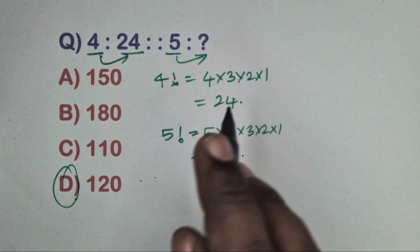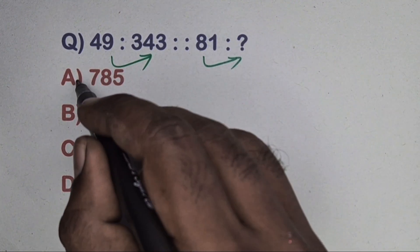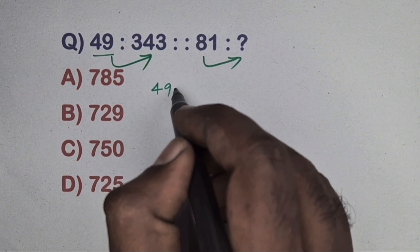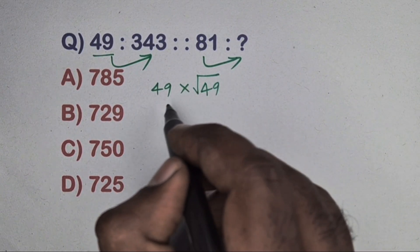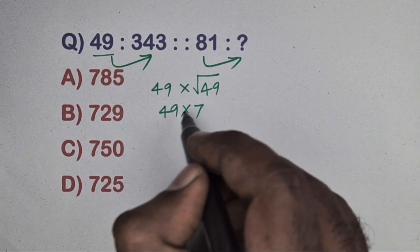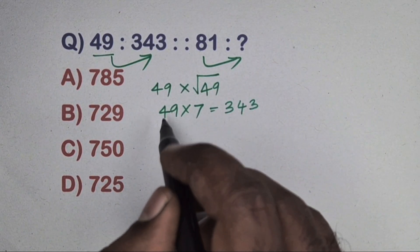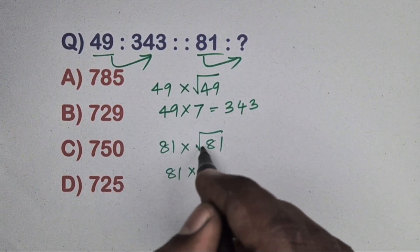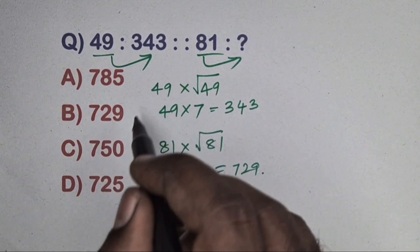Next question: 49 is related to 343 and 81 is related to which number? Take 49 — multiply 49 by its square root: square root of 49 is 7, so 49 into 7 is 343. Same way take 81 — multiply 81 by its square root: square root of 81 is 9, so 81 into 9 is 729. Option B is the correct answer.